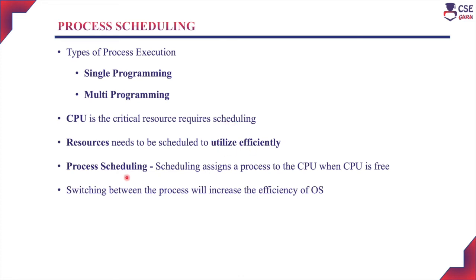Process scheduling is nothing but assigning a process to the CPU whenever the CPU is free. Switching between processes increases the efficiency of the operating system. In single programming, only one job executes while others wait in the job queue, but in multi-programming, many jobs share the CPU for execution whenever the CPU is free.